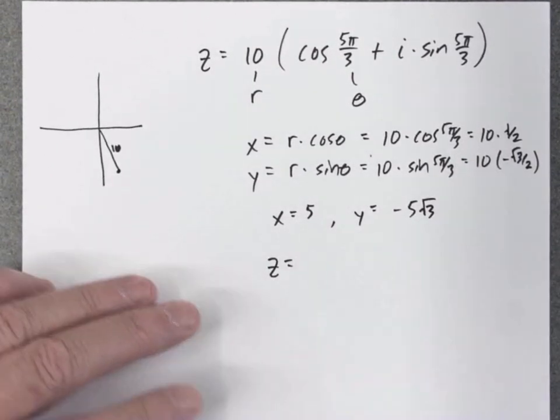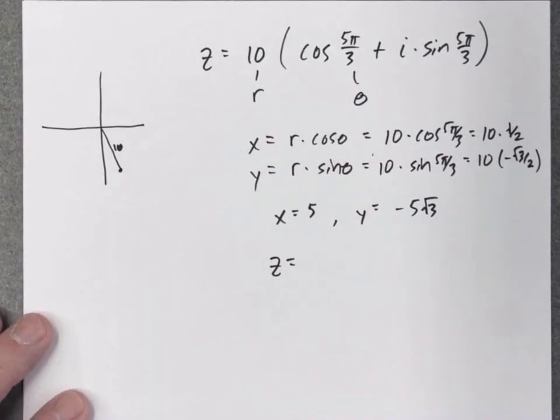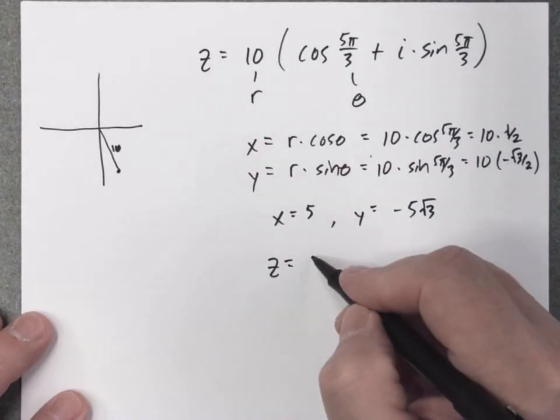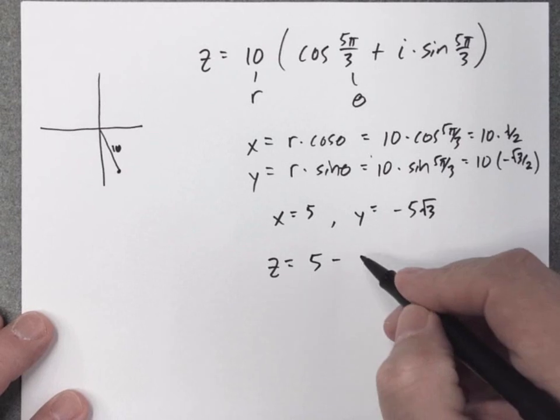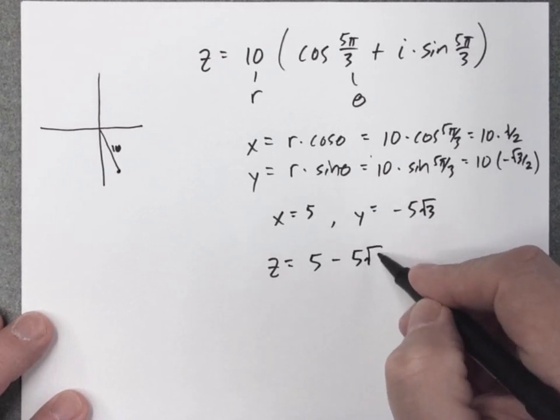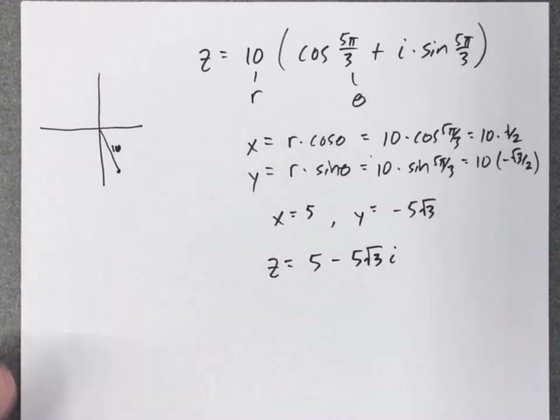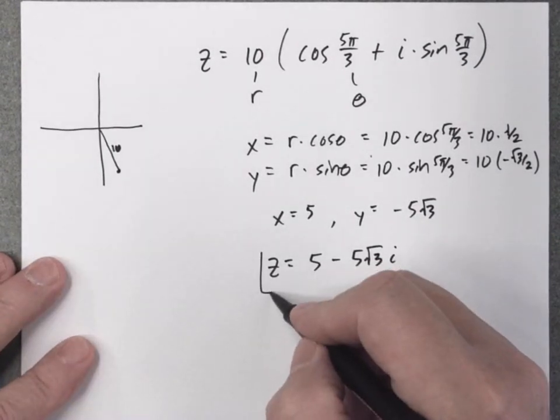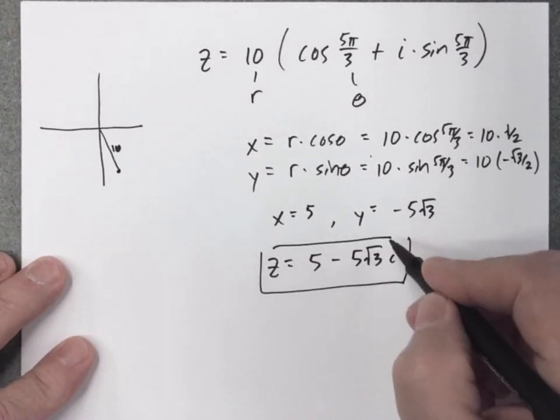So now this complex number in rectangular form is just going to be 5 minus 5 square root of 3i. That is not bad.